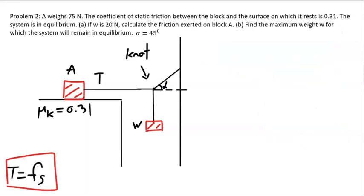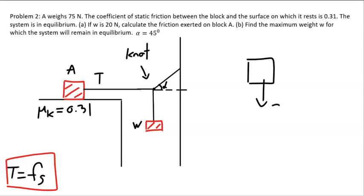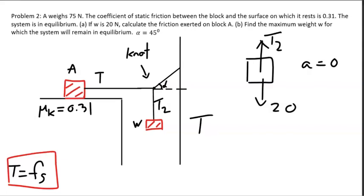Now let's construct the free-body diagram for the hanging weight. We have the small weight of 20 newtons downward and tension T2 upward. Since acceleration is zero, T2 = 20 newtons immediately.